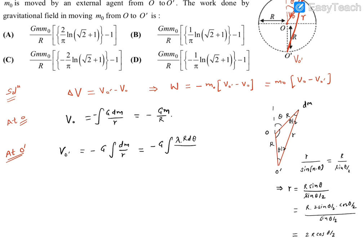We can replace sine theta as sine 2(theta by 2), which equals 2 sine(theta by 2) cos(theta by 2). Dividing by sine(theta by 2) gives small r equals 2R cos(theta by 2).